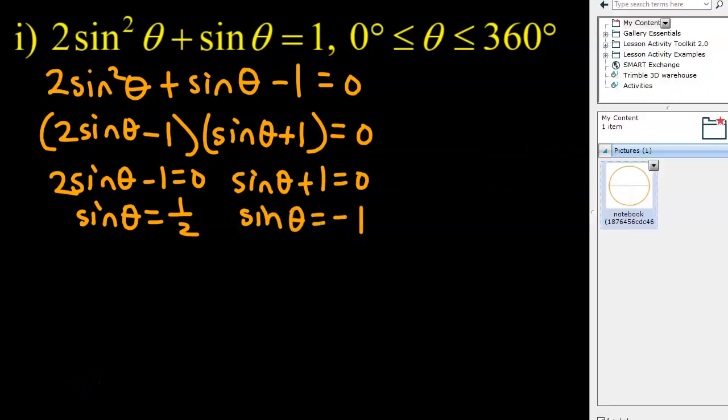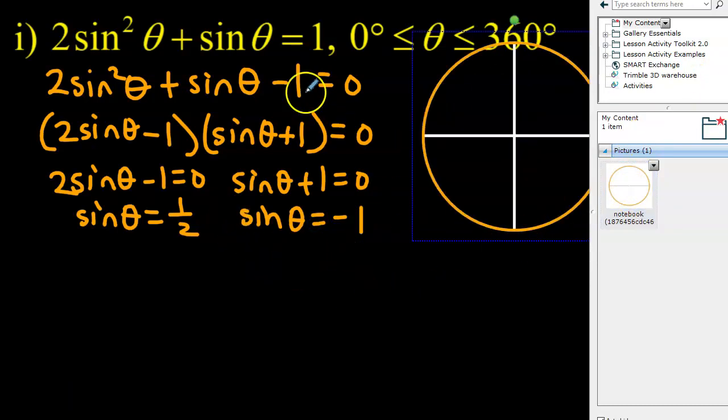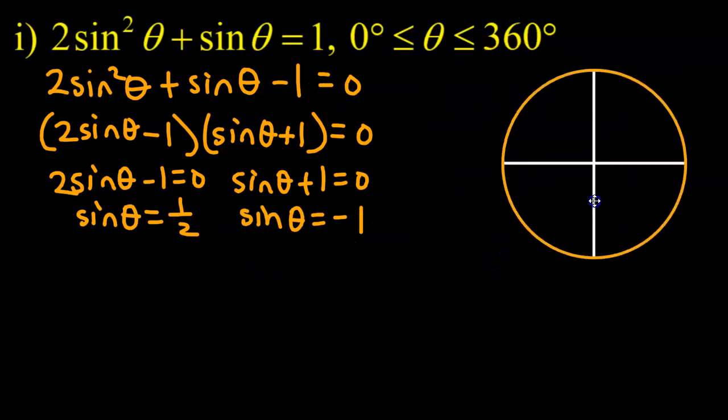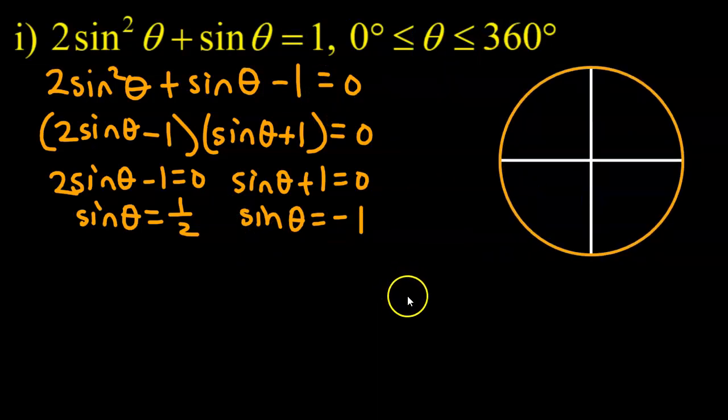I'm going to grab my unit circle here. You guys are probably just drawing a quick circle with an x-axis and a y-axis. That will help you determine the angles on the unit circle. Sine theta equals half right here and right here, right against the y-coordinate, about halfway up the unit circle. And sine theta equals negative 1 down here, straight down. The y-coordinate is negative 1, which is the full length of the radius.